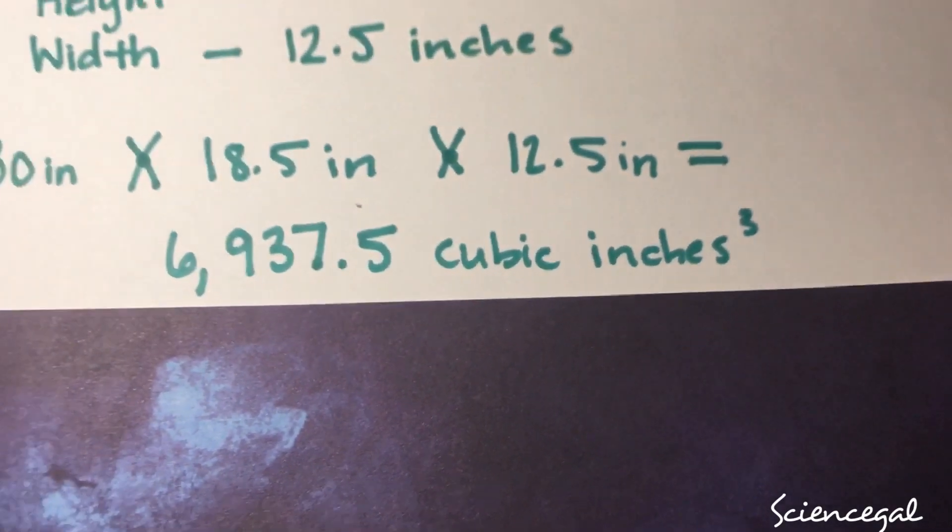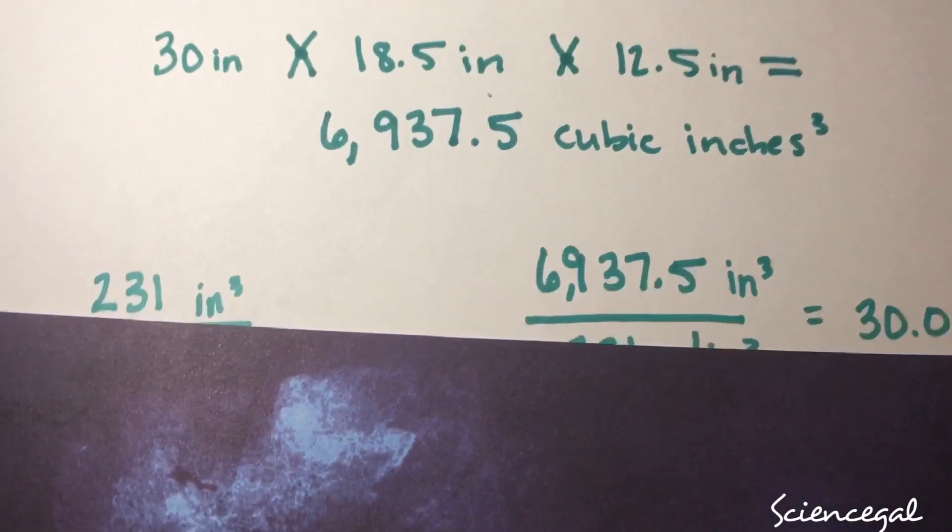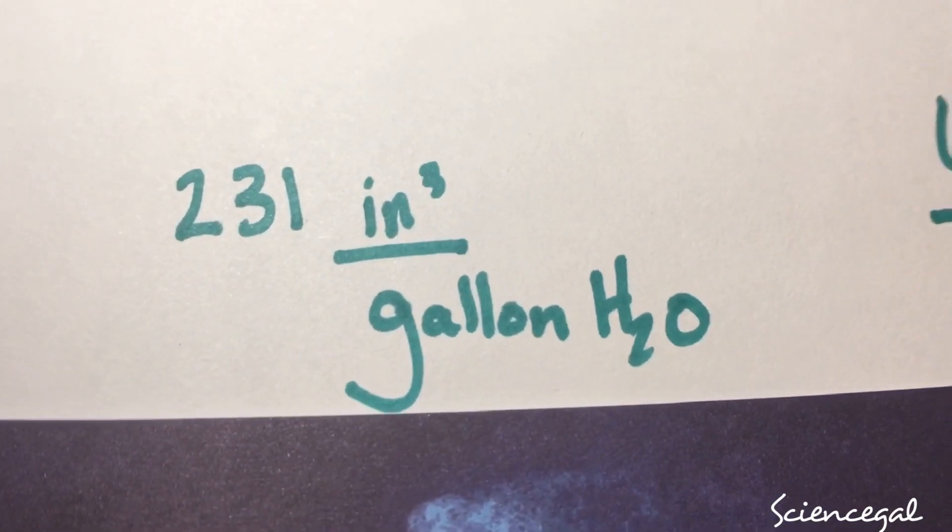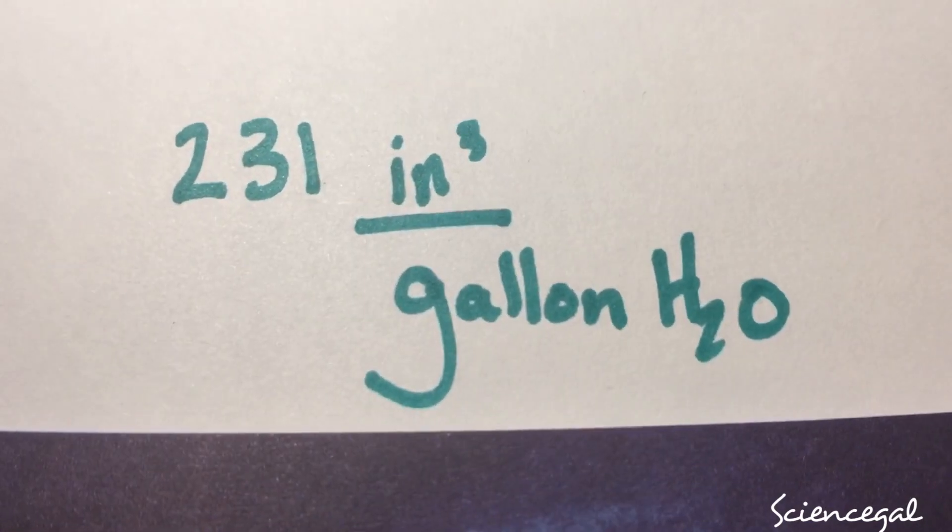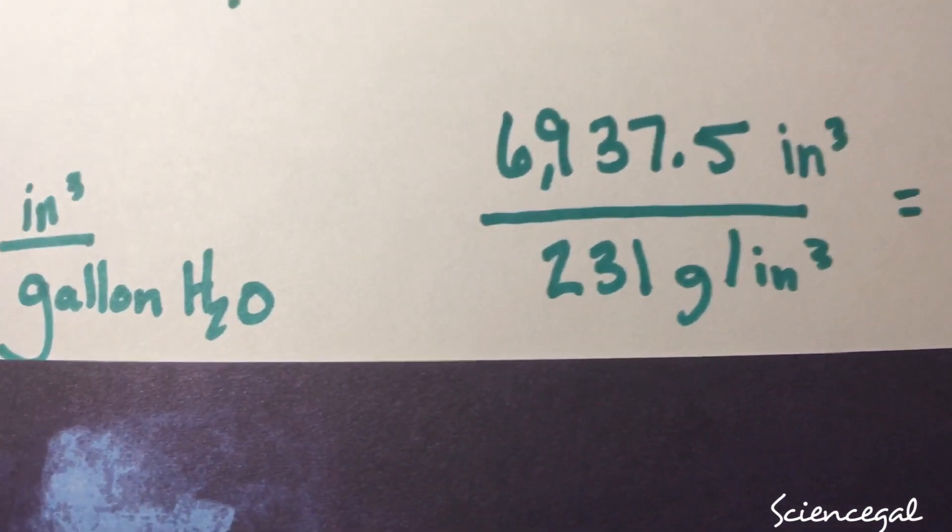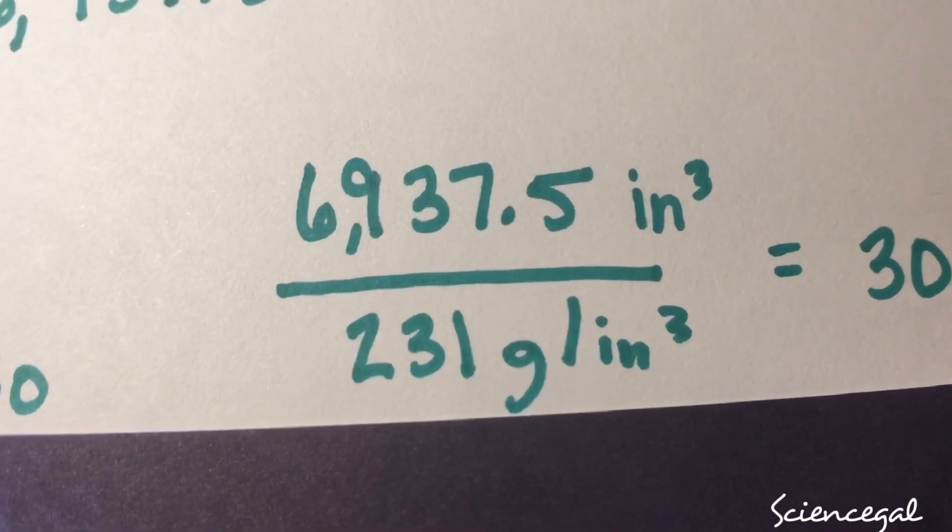And then after you multiply those, you need to know that there's 231 cubic inches in a gallon of water. So you're going to take that number and divide it by your number you just calculated.